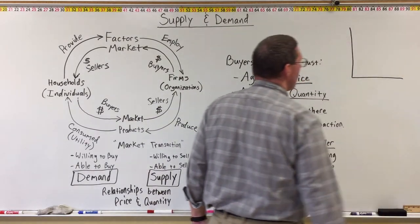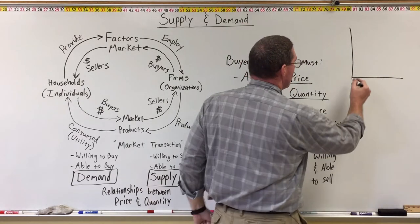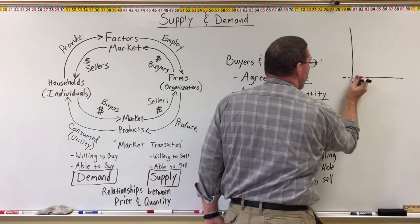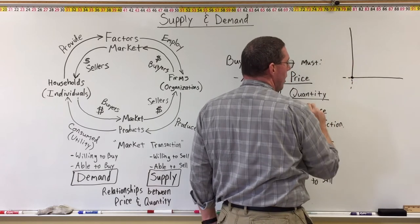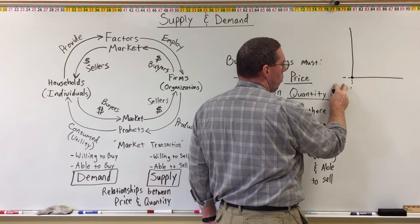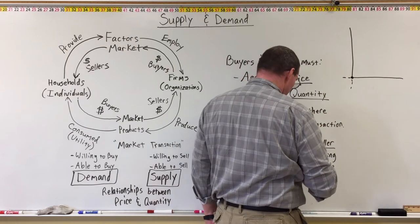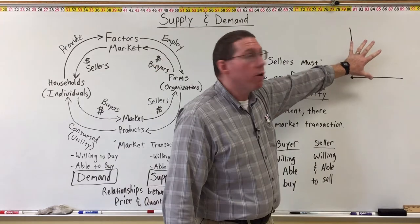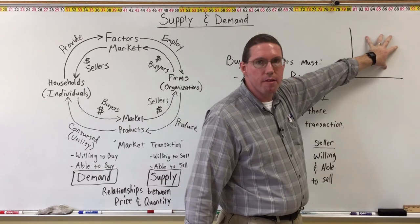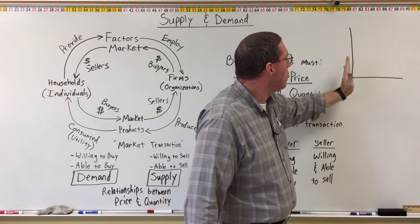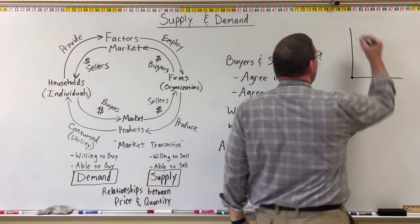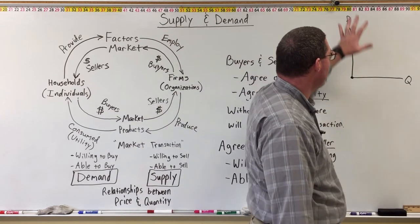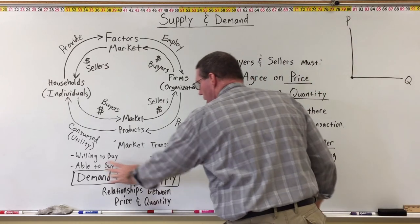Because price and quantity are numerical values, we can graph these relationships on a coordinate plane. This is the first quadrant of the coordinate plane — the x-axis and y-axis meet at point (0,0). In economics, price is never negative and quantity is never negative, so we only graph these relationships in the positive first quadrant. Instead of x and y, we use P for price and Q for quantity. The relationships between price and quantity that we graph are supply and demand.